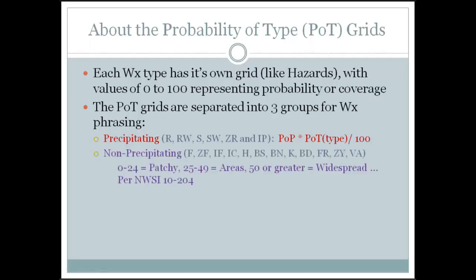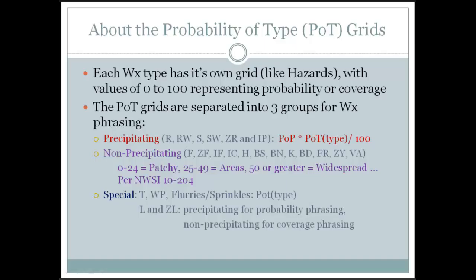The formula is: just multiply POP times the probability type divided by 100. Then there are the non-precipitating types — I kept these as scalar values as well. For example, if you're expecting patchy fog, you throw a value of 20 in the grid. Then there are a couple of special types that can follow either the precipitating or non-precipitating formula — things like thunderstorm, waterspout, drizzle, and freezing drizzle. I recently redid the methodology and got rid of the non-precipitating option for drizzle and freezing drizzle — it just made things way too complicated. Drizzle and freezing drizzle are now handled by putting a 15 POP into the grid.